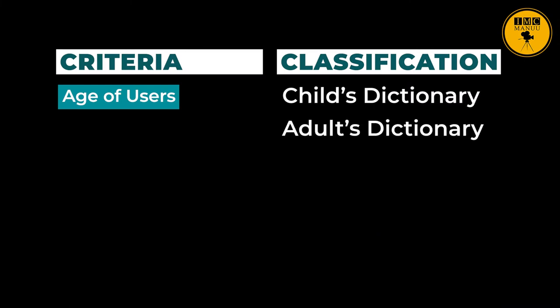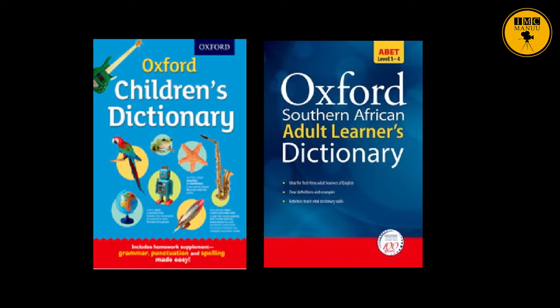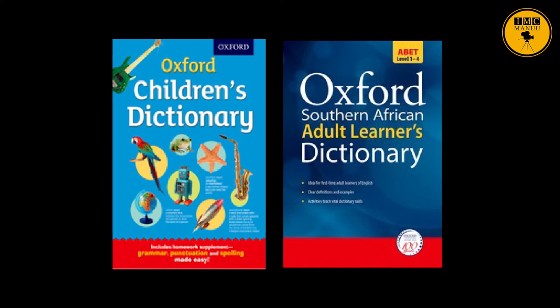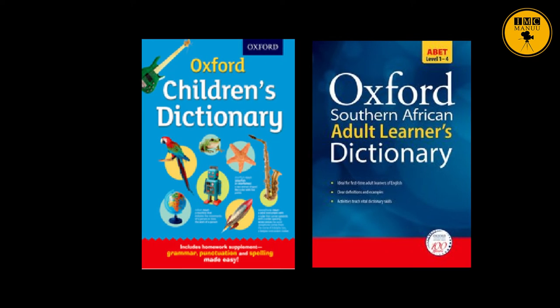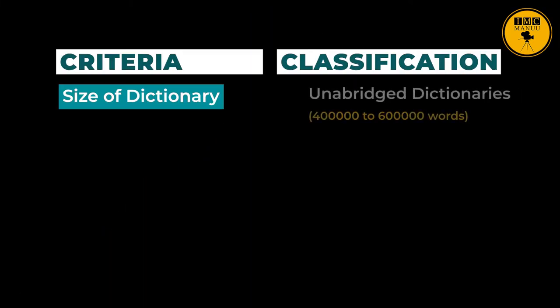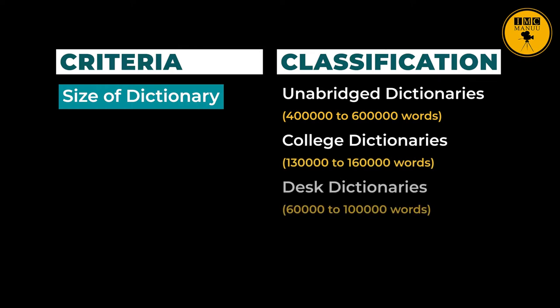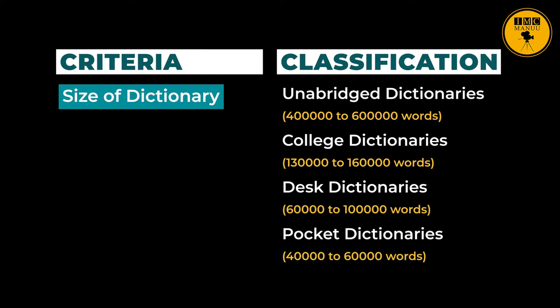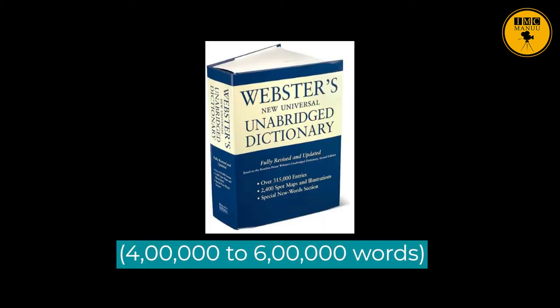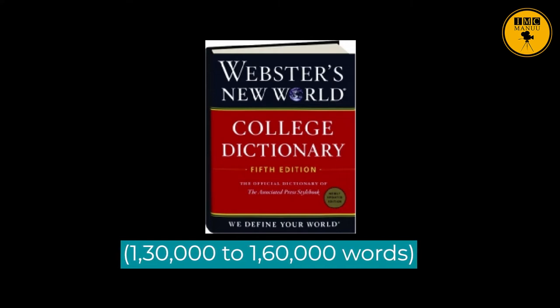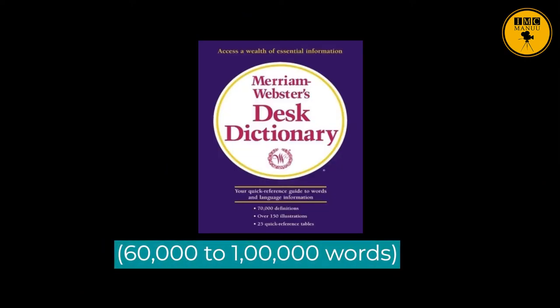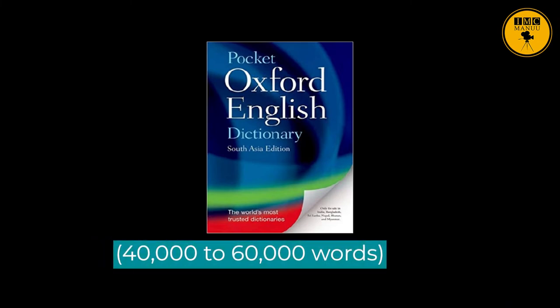According to the age of users, there are two types of dictionaries: Child's Dictionary and Adults Dictionary, such as the Oxford Children's Dictionary and Oxford Southern African Adult Learners Dictionary. According to the size of dictionary, there are four types: unabridged dictionaries comprising four lakh to six lakh words; college dictionaries comprising one lakh thirty thousand to one lakh sixty thousand words; desk dictionaries comprising sixty thousand to one lakh words; and pocket dictionaries comprising forty thousand to sixty thousand words.